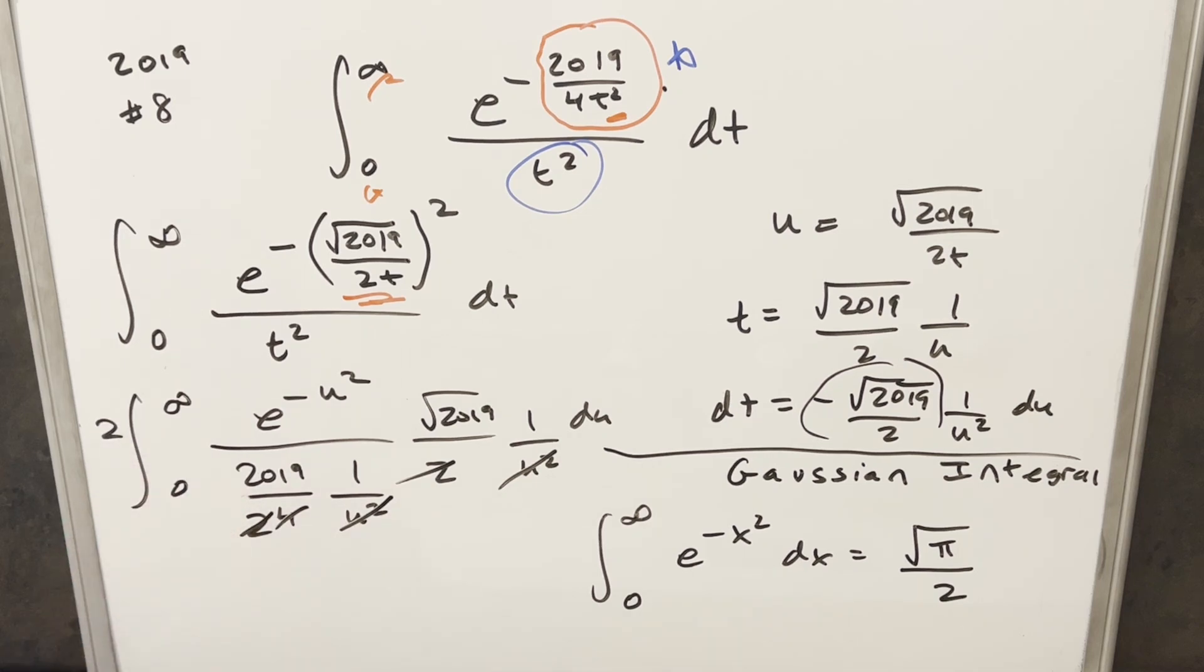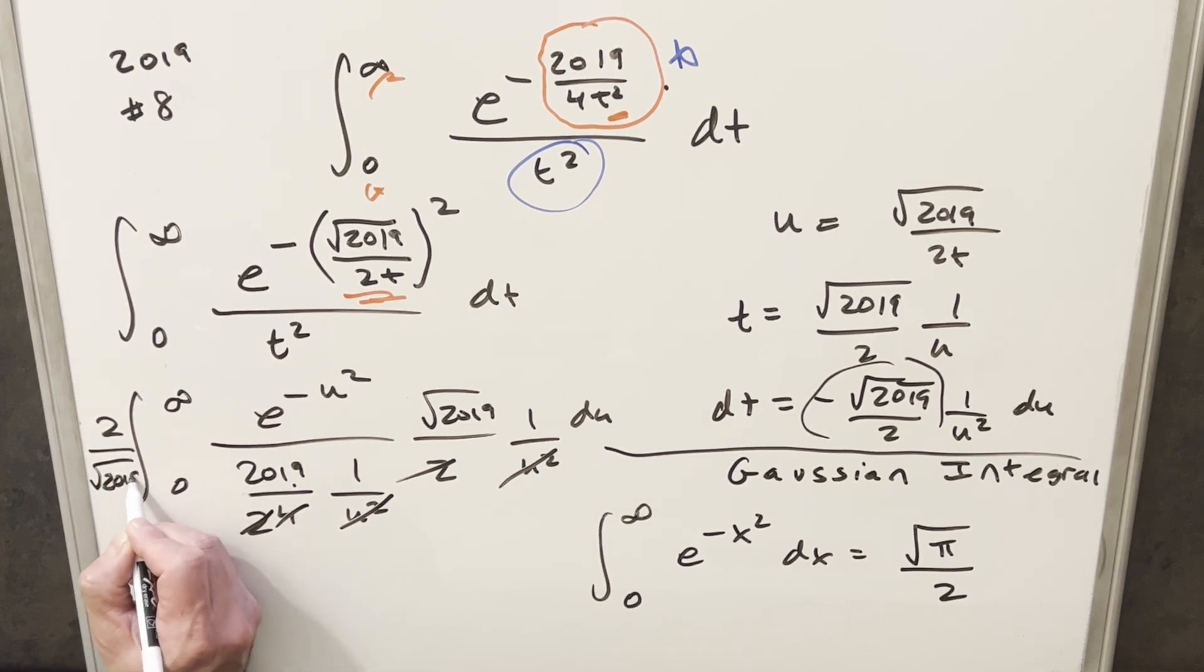We'll bring that up front here. And then what I can do is divide this 2019 into the square root of 2019. And I can bring it up front as square root of 2019 here.